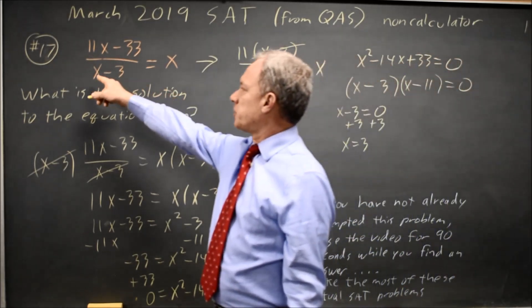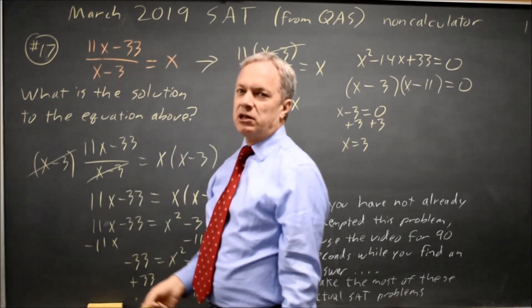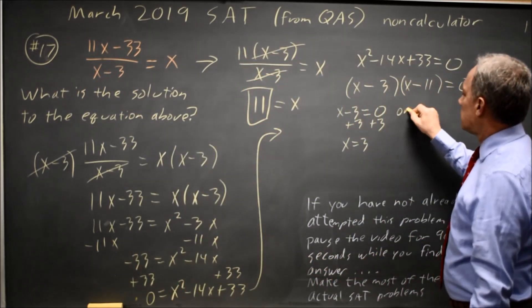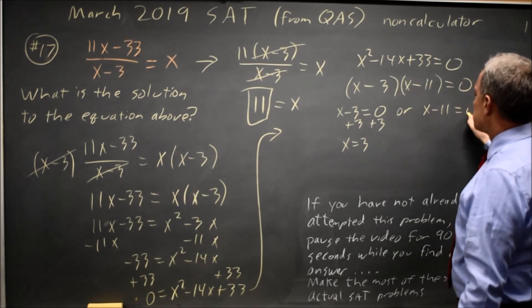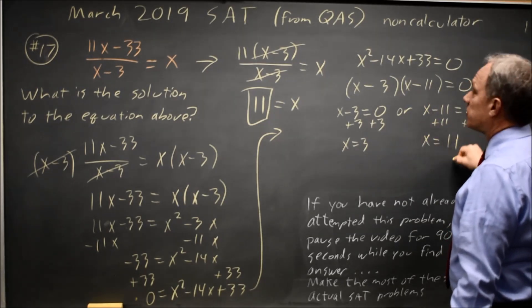But that does not work here because if x equals 3, my denominator is 3 minus 3, which is 0, and I'm not allowed to divide by 0. Or x minus 11 equals 0, so x equals positive 11.